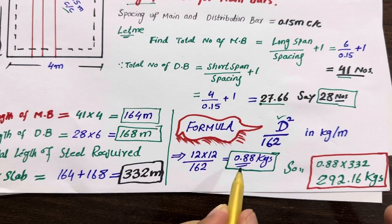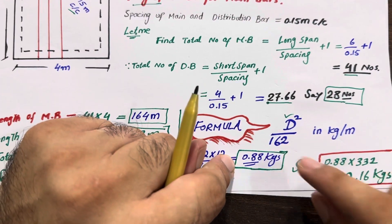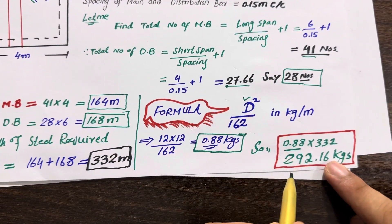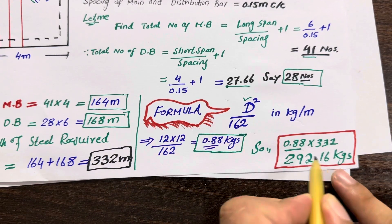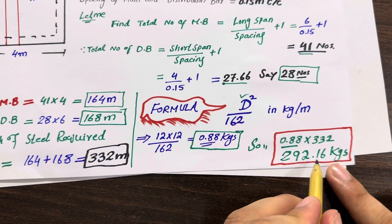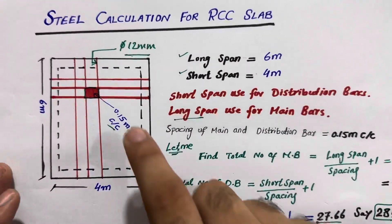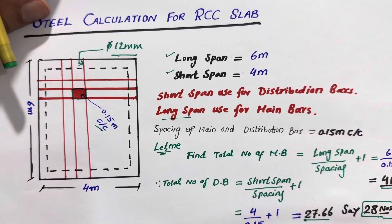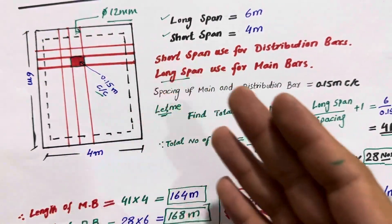If you have 10 mm or 16 mm diameter, you can use the same formula to find the unit weight per meter. The unit weight is 0.88 kg per meter, and total length is 332 meter for main bars and distribution bars combined. Therefore, 0.88 multiplied by 332 meter gives 292.16 kg of steel required for this RCC slab of size 4 by 6 meter.